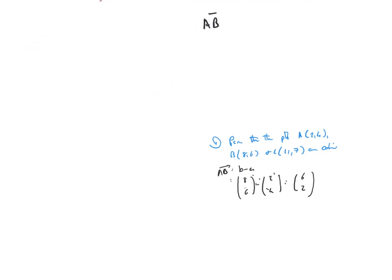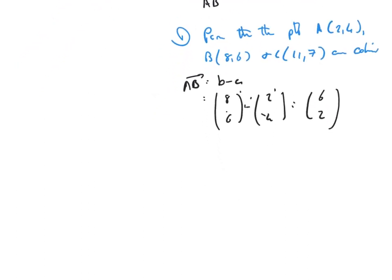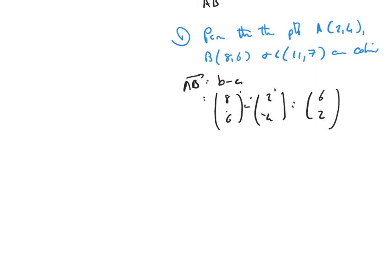Let's now investigate BC. Okay, so BC is going to be C minus B, and that is (11,7) minus (8,6). 11 take away 8 is 3, 7 take away 6 is 1.